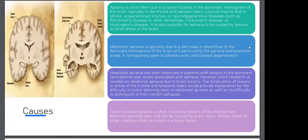The causes of apraxia — we have a photo for these causes. Most often the lesion is located in the dominant hemisphere of the brain, typically in the frontal and parietal lobe lesion, possibly due to stroke, brain injuries, or neurodegenerative disease such as Alzheimer's disease or other neurological conditions.